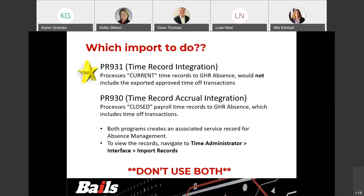So which one do you use? The PR931 is going to process current time records, and honestly, that's the one you should be utilizing — we'll get into the reasons why right after this. Or you could do a close. Both programs create an associated service record for absence management to do the processing.